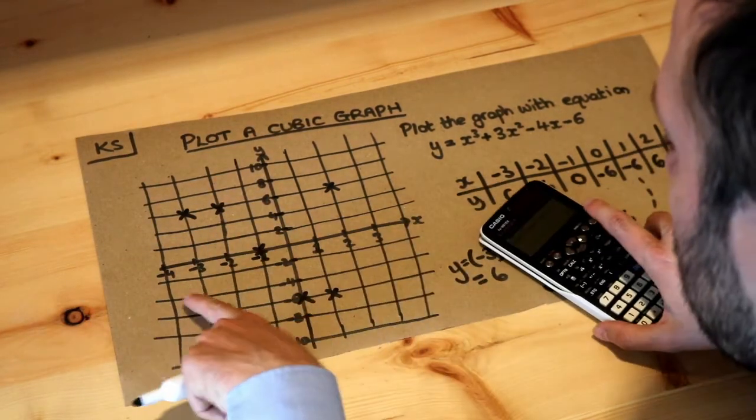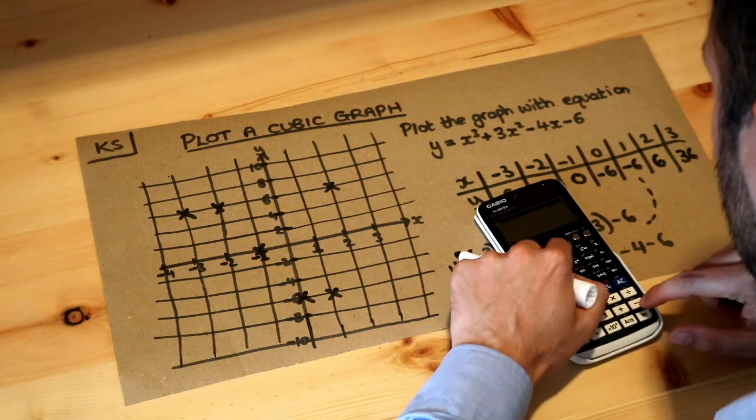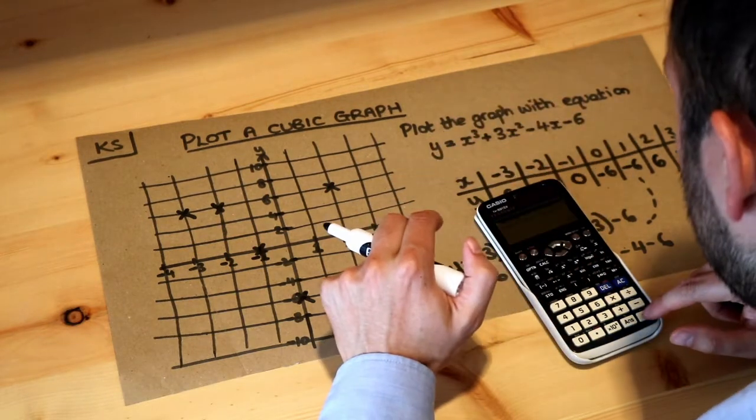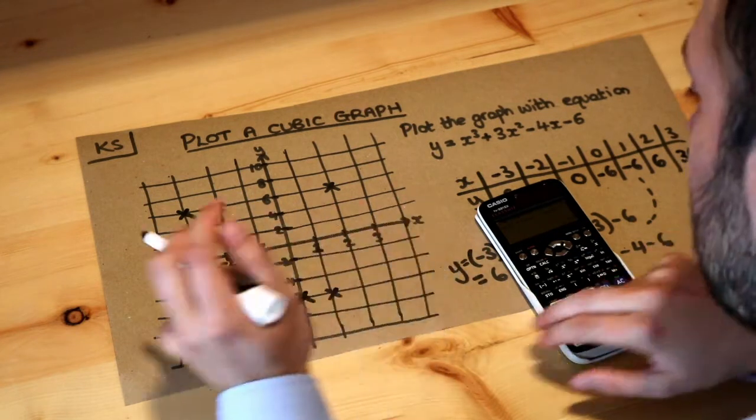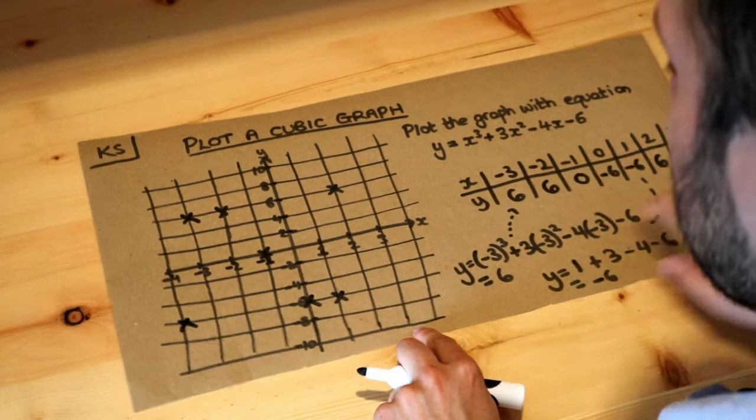So let's also sub in minus 4 because I just want to see what's happening on the left here. So if I put in minus 4 and sub that into this expression here I get minus 6 again. So it will be down here. So we get this rather interesting shape indeed.